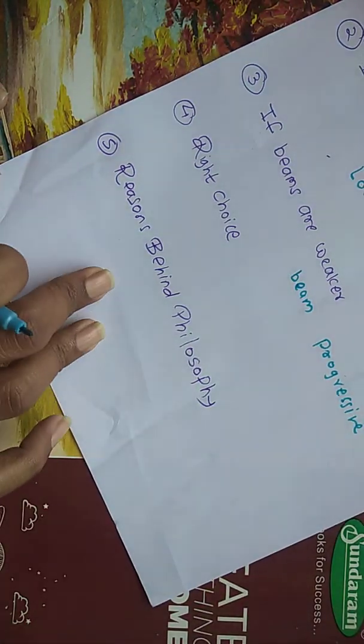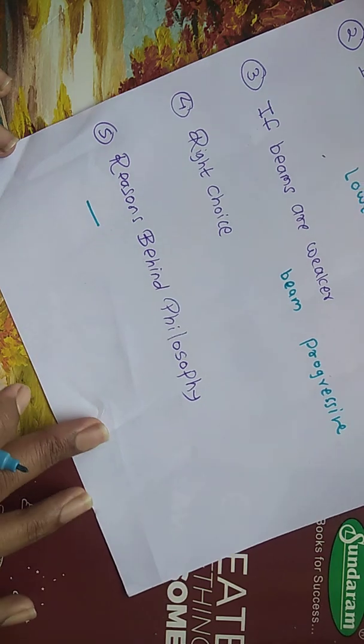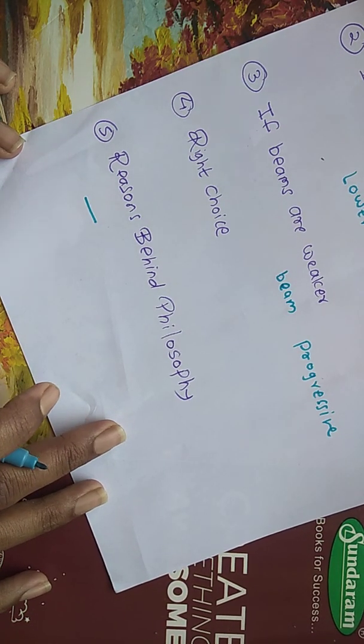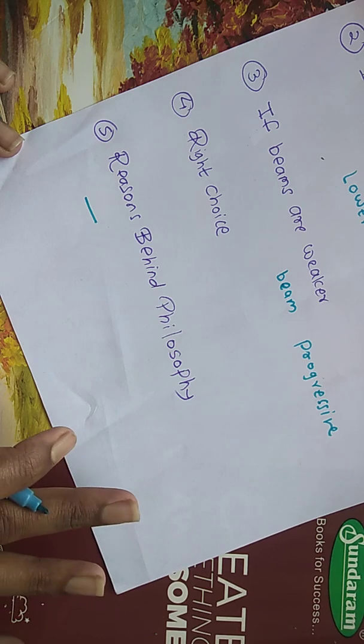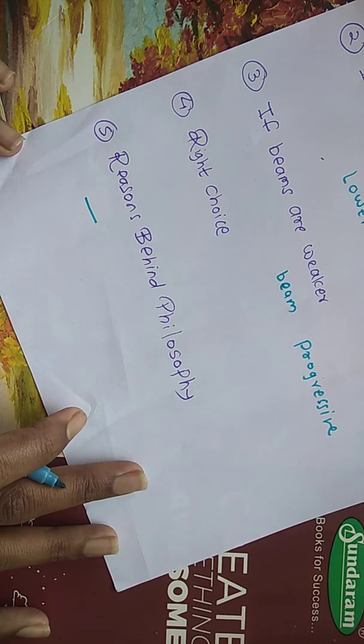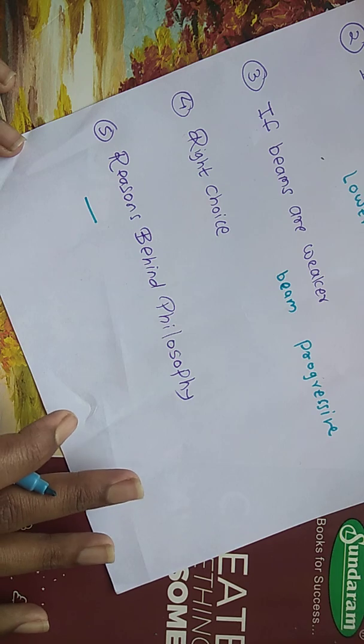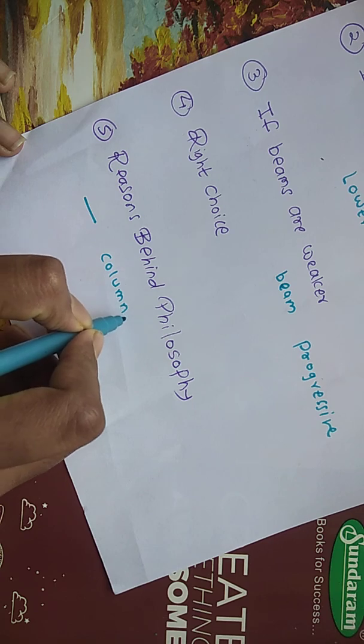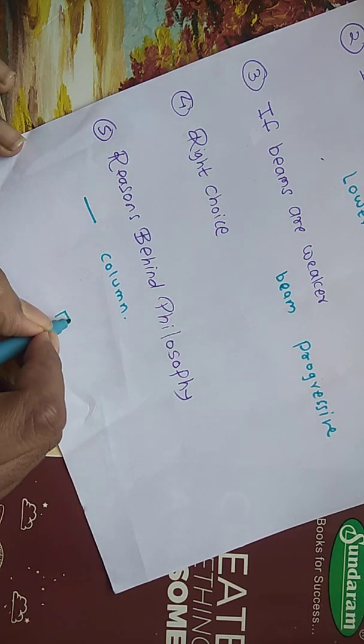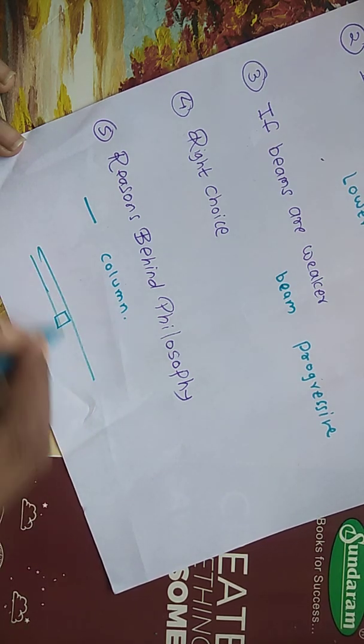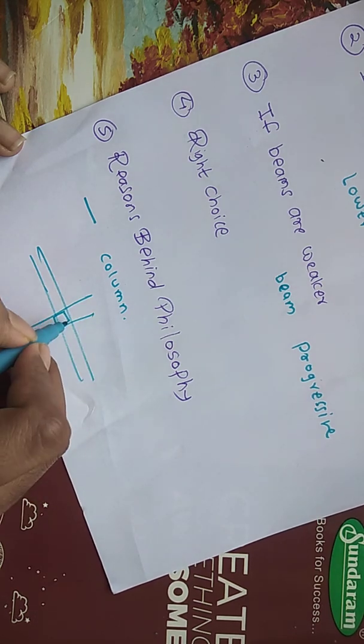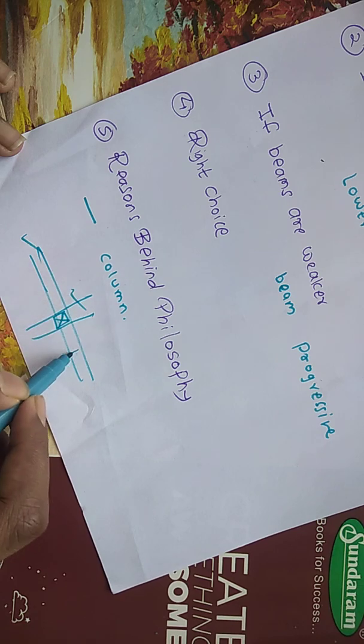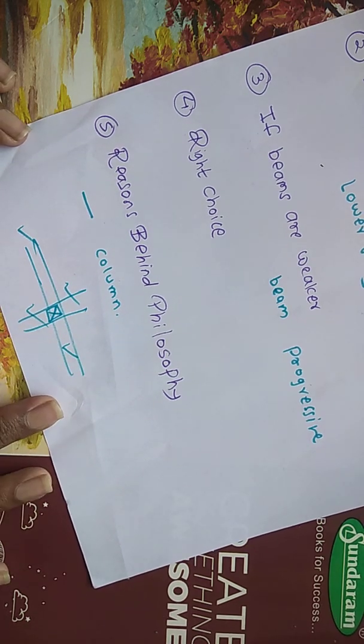Our right choice will be strong column and weak beam—weak beam in terms of ductile. Now there are many reasons behind this philosophy. First, the failure of a column can affect the stability of the whole building, but the failure of a beam causes a localized effect. When one column fails—suppose that column is an interior column on which several beams are resting—it will automatically cause other beams to fail.